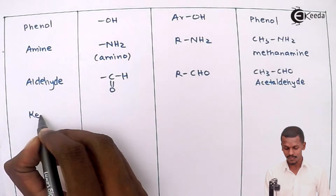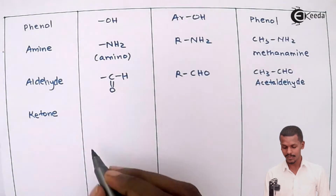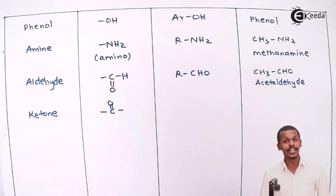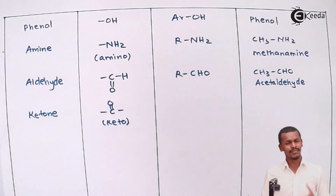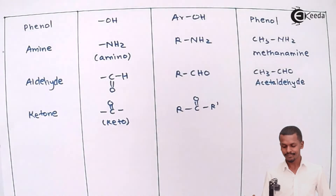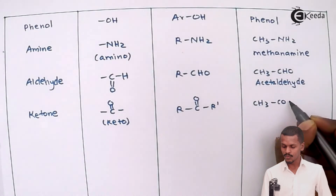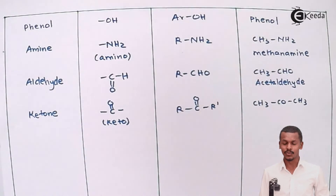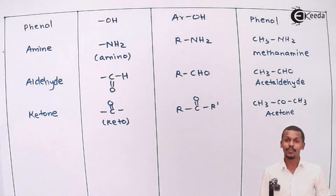The next class is ketones. Ketones are known for the keto group, C=O, flanked by two alkyl groups. The general formula is RC(=O)R'. A simple example is CH3COCH3, known as acetone or by its IUPAC name propanone.